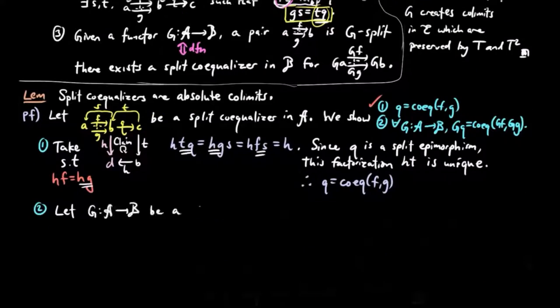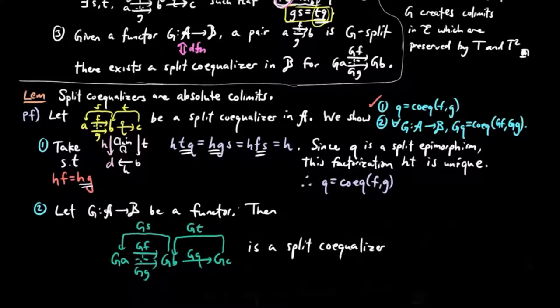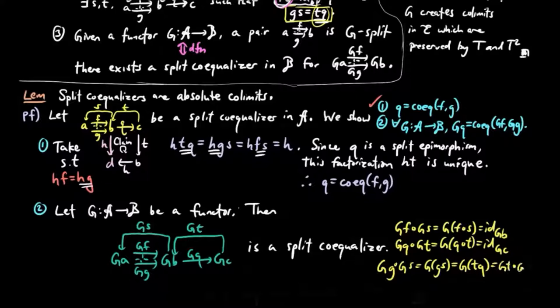For two, let G be a functor. Then it is easy to see that G takes this split co-equalizer diagram above to a split co-equalizer diagram in the category B, since functors preserve composition and identities. And therefore, by one, GQ is equal to the co-equalizer of GF, GG.